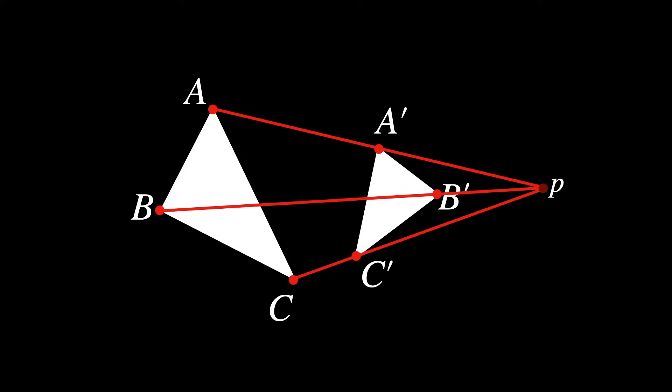Now extend the sides of each triangle to meet the corresponding extended sides of the other triangle. Extend AB to meet A'B', BC to meet B'C', and CA to meet C'A', and label each intersection point.